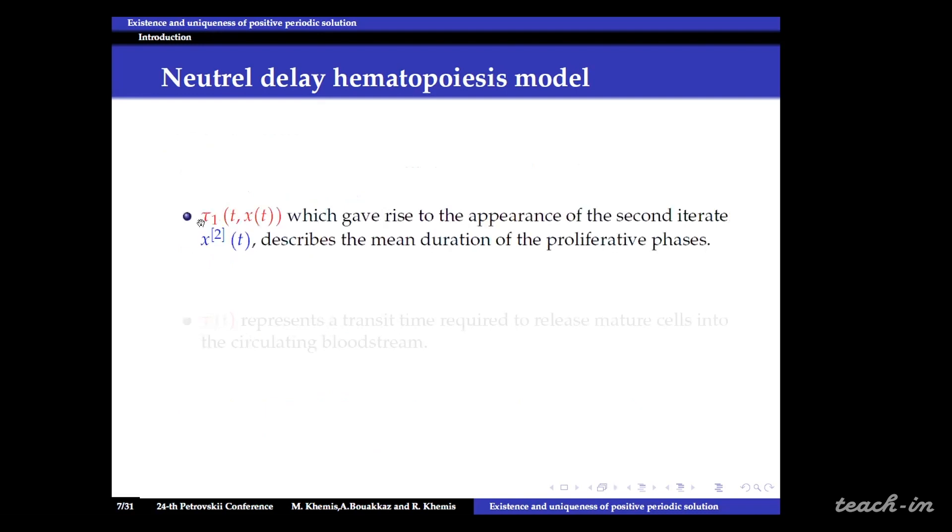Where tau1 which gave rise to the appearance of the second iterate describes the mean duration of the proliferative phases and the other delay represents a transit time required to release mature cells into the circulating bloodstream.